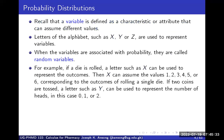Remember that a variable is an attribute or characteristic which can take different values. Under discrete probability distributions, we'll be using variables like capital X, Y, and Z to represent variables — the random variable. When a variable is associated with a probability, we call it a random variable, as opposed to any other variable not attached to any probability.